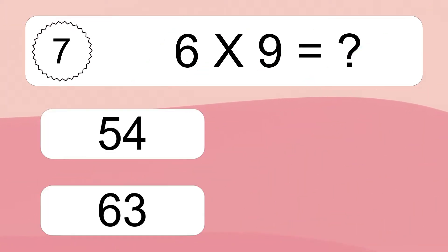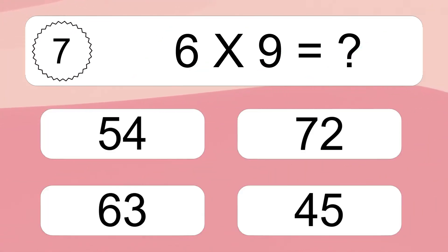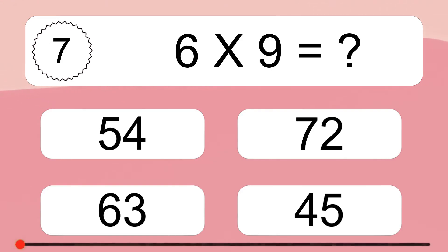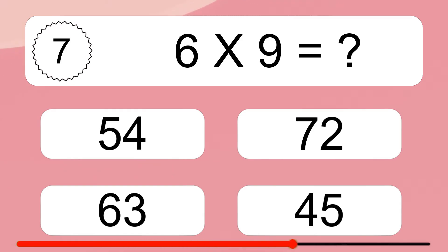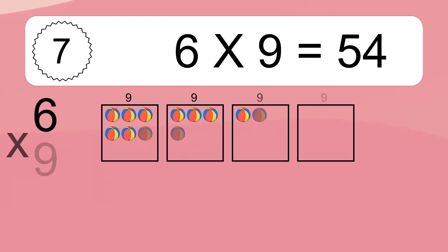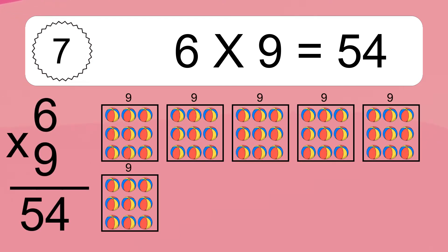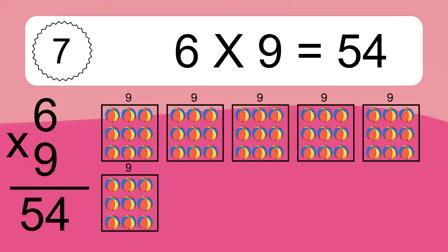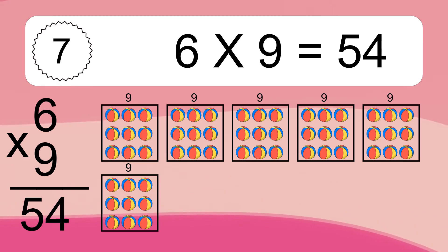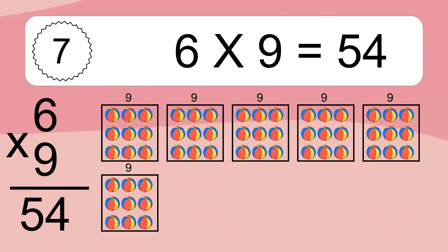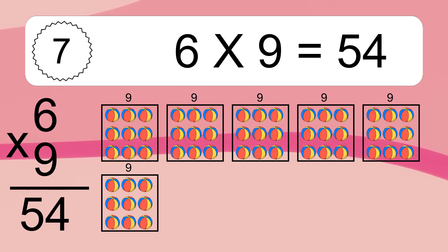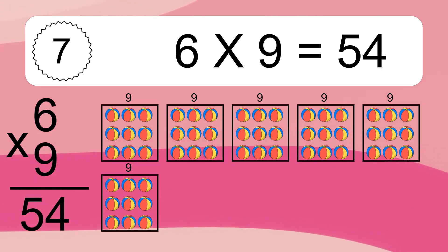Six times nine equals what? Six times nine equals 54. We have six boxes, and each box has nine colorful balls inside. If you count all the balls in all the boxes together, you will have six times nine balls. This equals 54 balls.